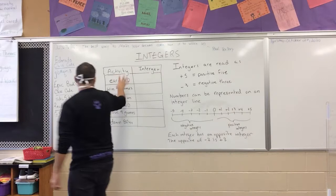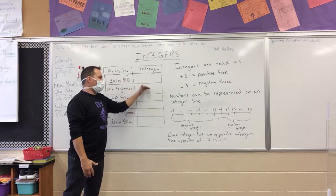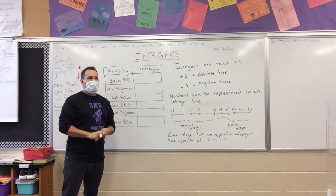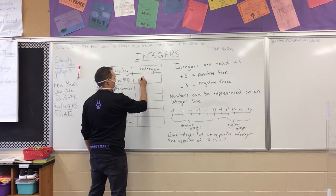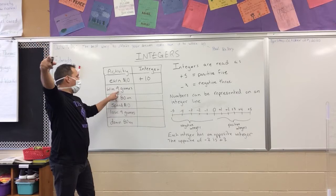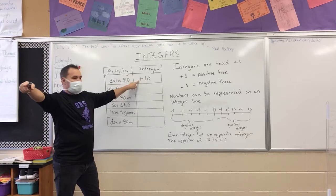When we look at this chart here, we have an activity where we represent situations with integers — very basic to start. When we look at earning ten dollars, how can we write that as an integer? If you've worked and earned ten dollars — yes, we say positive ten. What about your team wins nine games? What are you thinking, Josie?